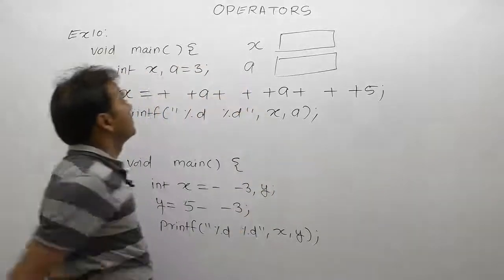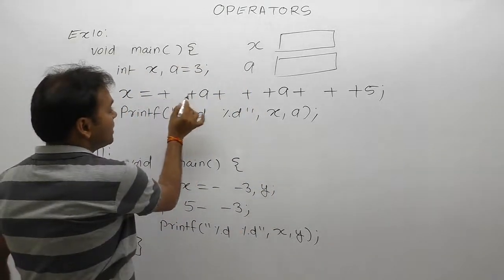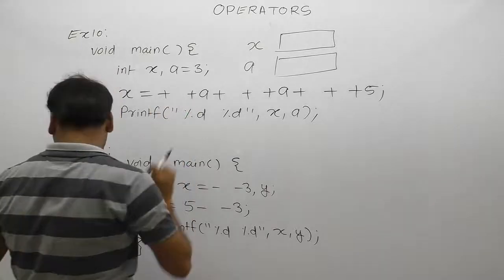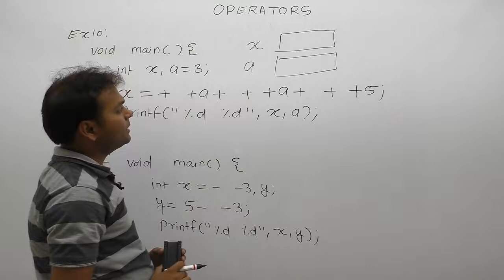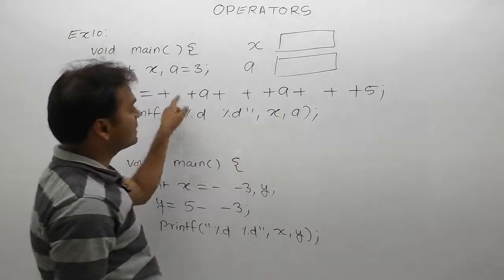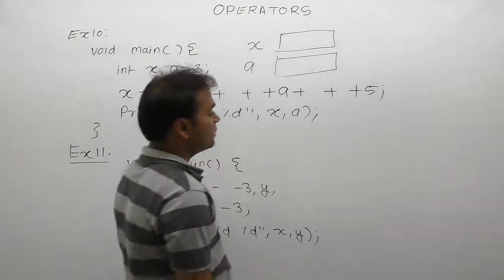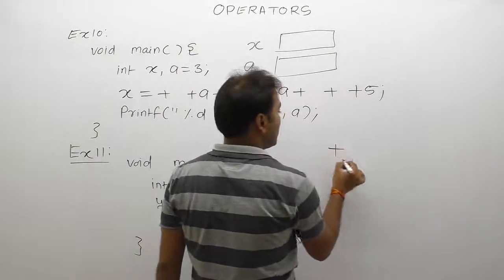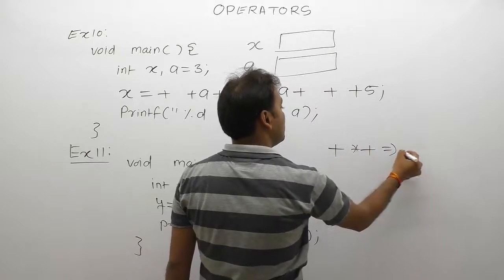In this case, we have multiple plus operators. The highest priority is taken by unary operators. Multiple plus signs mean unary plus - unary plus can appear multiple times, along with multiplication and other operators.